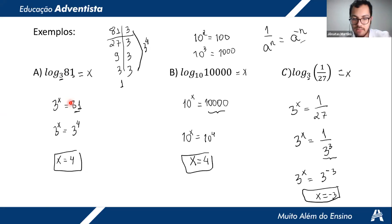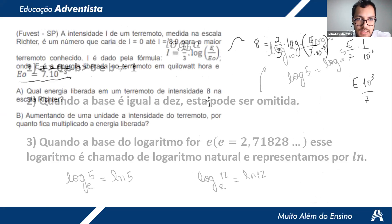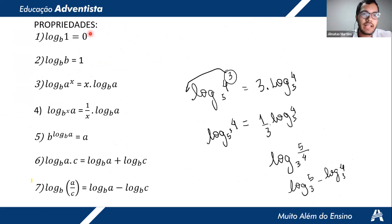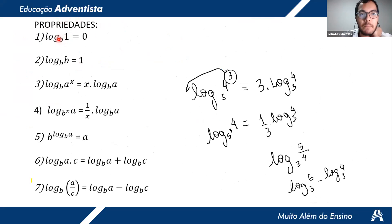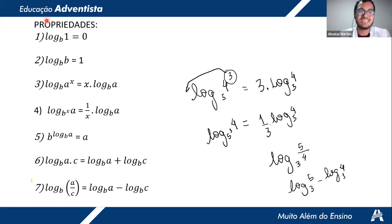If you weren't here last week, we're going to apply these concepts again. Remember that the big number is the logarithm and the small one is the base. Log of 1 in any base will always be 0 — I can even prove it because b raised to 0 is 1. So log of 1 base 5 is 0, log of 1 base 10 is 0, log of 1 in any base is 0.